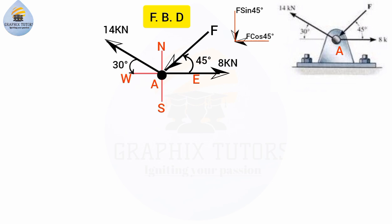Now for the inclined force of 14 kilonewtons — the same approach applies. The 14 kilonewtons lies between the North and West. When I bring out the North and West, the arrow is going outward, so I'll place my arrows at the North and West ends. Since it is inclined to the horizontal, the vertical component will be sine and the horizontal will be cosine, giving 14 sin 30 and 14 cos 30. I will not touch the 8 kilonewtons because it is already a horizontal component.